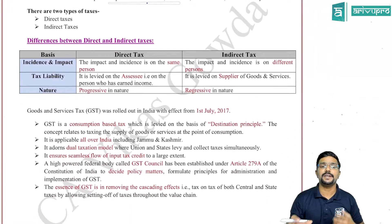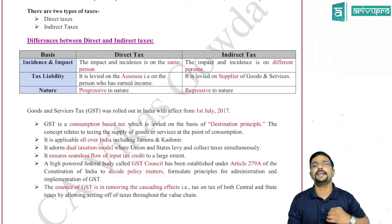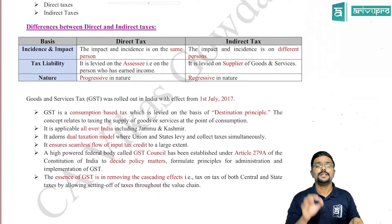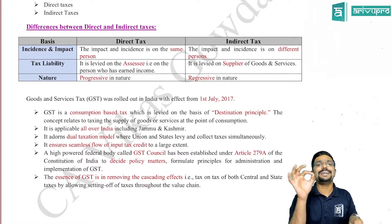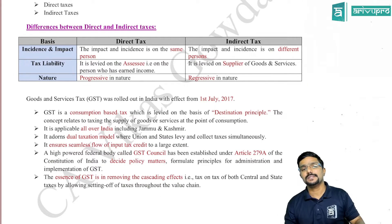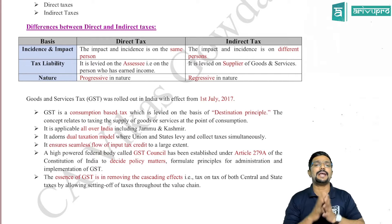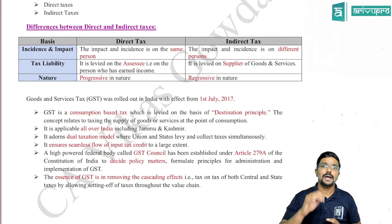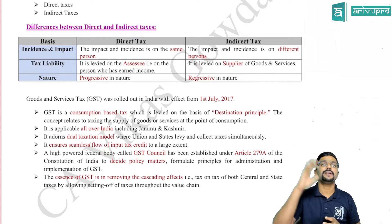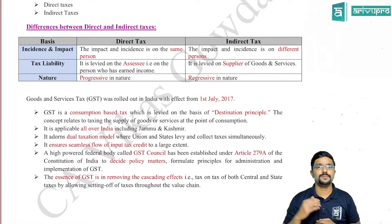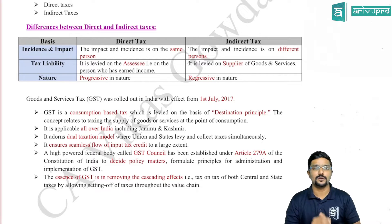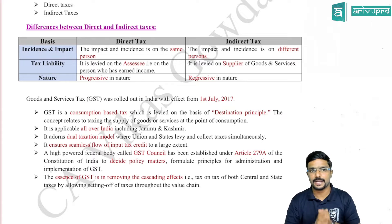There are two types of taxes in India: direct and indirect. Direct tax is the one where the impact and incidence is on the same person. Incidence means the liability to pay tax; impact means the ultimate suffering of tax — that is, from whose pocket the tax is ultimately going to the government. Income tax is one example of direct tax.